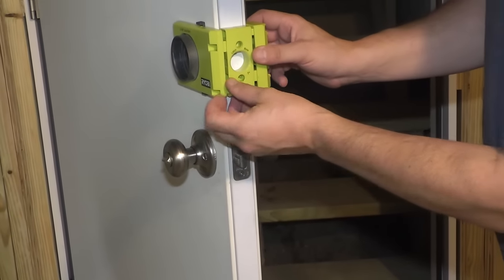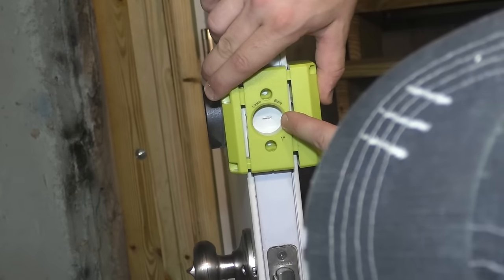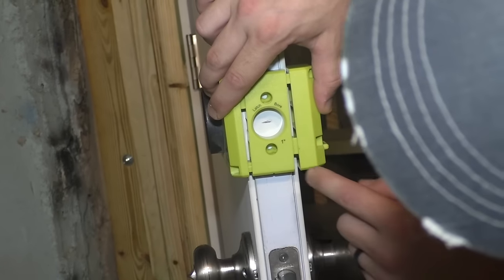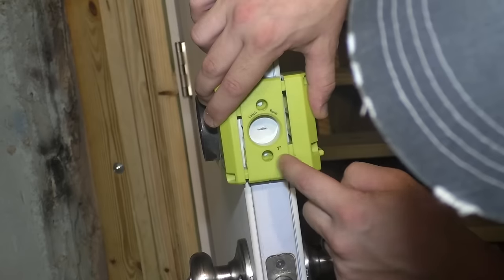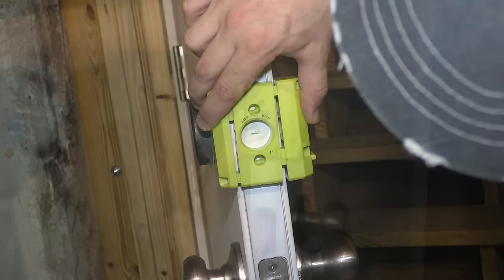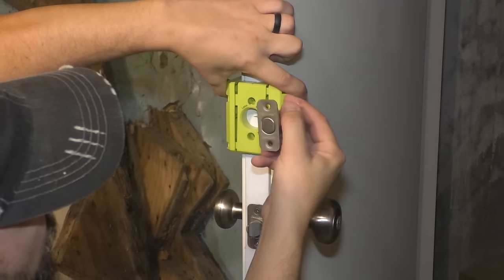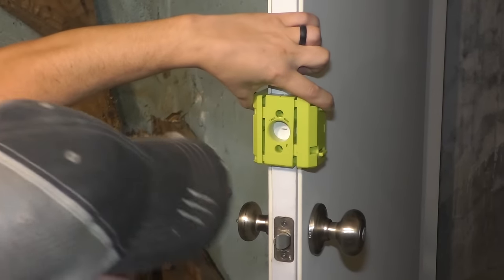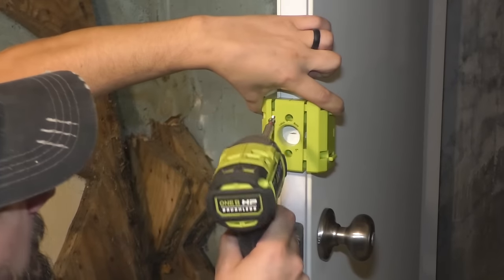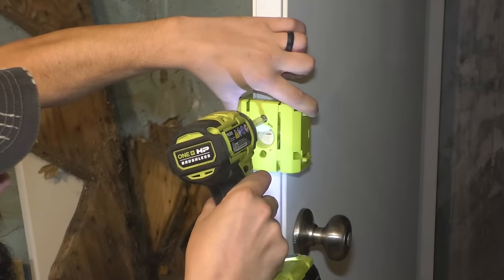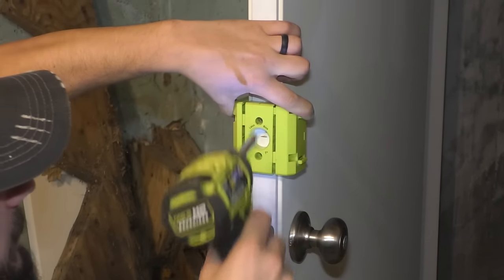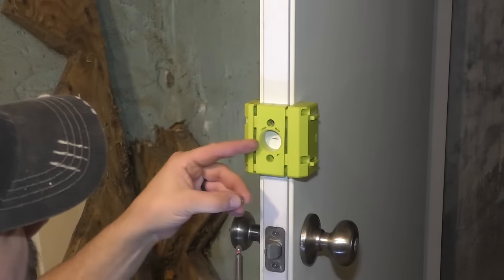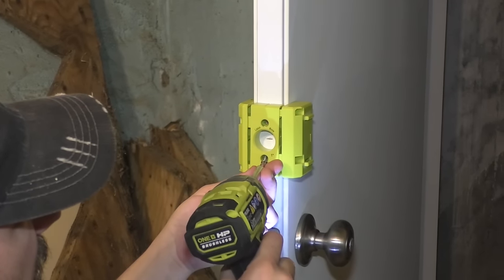You get it lined up in the center like this where that line is, wherever you want the deadbolt. And then you can put some screws in here temporarily to hold it in place. The screws that I put in here, they're going to line up with the latch that you're going to install afterwards. So you don't have to worry about putting useless holes in here. You don't want to crank these down. This is plastic. This is just a guide for you.